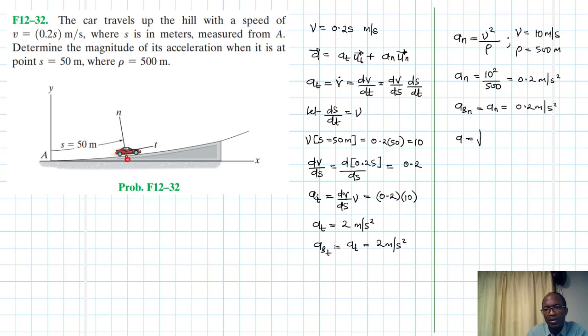Using the Pythagorean theorem, a is just equal to abt squared plus abn squared. Therefore our a is just equal to the square root of 2 squared plus 0.2 squared. Square root of that gives us just 2.01 meters per second squared.